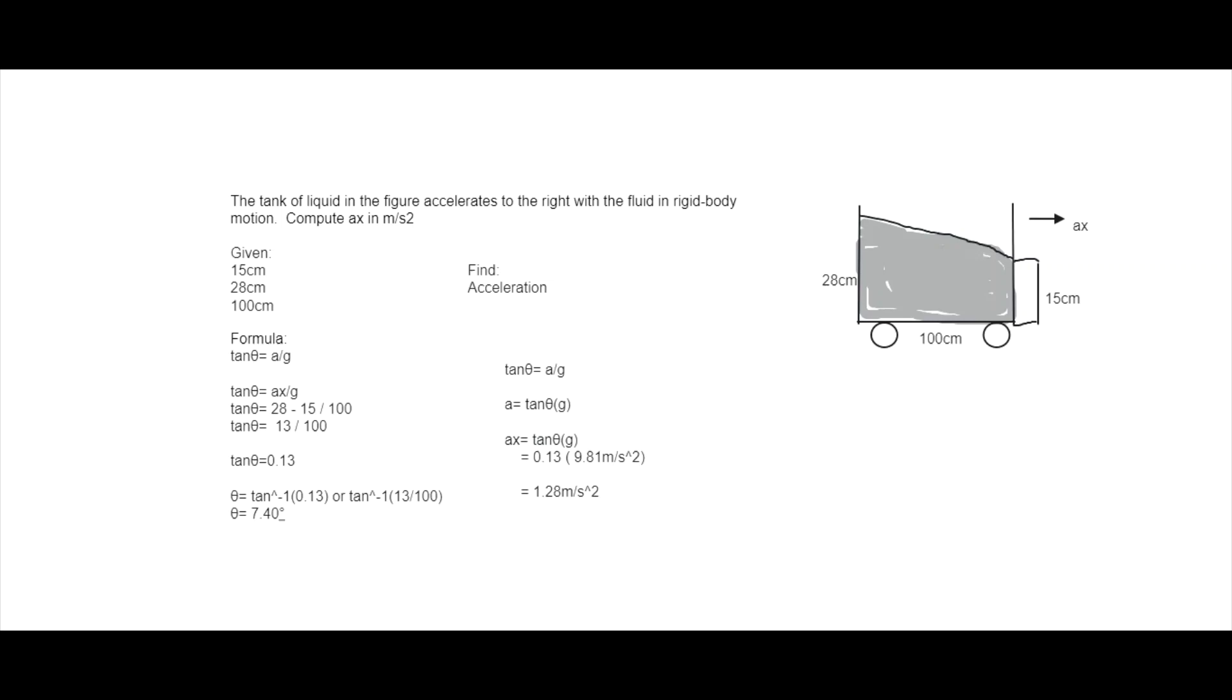So to find the tan theta, we're going to substitute the given. So 28 minus 15 over 100. So tan theta equals 13 over 100, or 0.13.